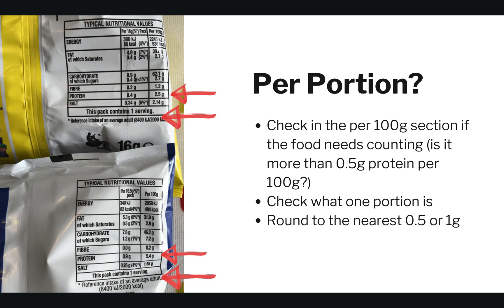What about calculating per portion? First we check in the per 100 grams section whether we need to count this product as exchanges. For this packet of crisps, per 100 grams there is 2.5 grams of protein — that is over 0.5 grams per 100 grams, so we do need to count it. The packet says it contains one serving, and per 16 gram pack the protein is 0.4 grams. Rounding to the nearest 0.5 or 1 gram, this packet of crisps contains 0.5 grams of protein, which is half an exchange.